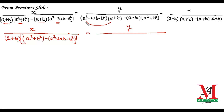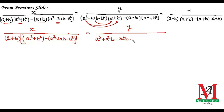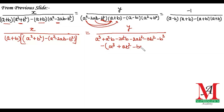Expanding the y numerator: a² × a = a³, a² × b = +a²b, −2ab × a = −2a²b, −2ab × b gives −2ab² (with sign: +), then −b² × a = −ab², and −b² × b = −b³. For the next part (with the minus outside the bracket): a × a = a², a × b² = +ab², then −b × a² = −ba², and −b × b² = −b³.